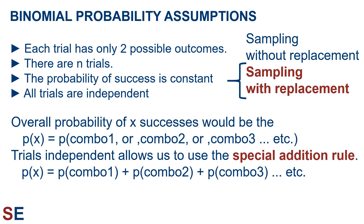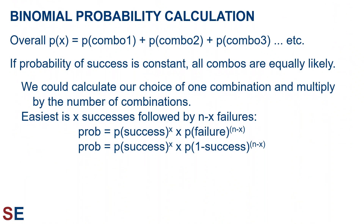The overall probability of X successes would be the probability of one combination of successes and failures that gives X successes, or a second combination, or a third, etc. Like in the coin flipping example, there were 20 different combinations and we had to consider them all. If all the trials are independent, we can calculate the probability of combination 1 or combination 2 or combination 3, etc., by adding the probability of combination 1 plus combination 2 plus combination 3, etc. So, we calculate the overall probability of X successes as the sum of the probabilities of all combinations that give X successes.